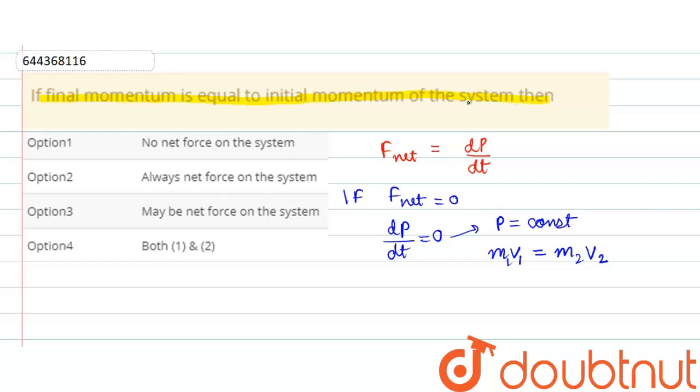This corresponds to constant momentum of the body, as this is only possible when the net force acting on the system is zero. So option one says no net force on the system, so this is correct.